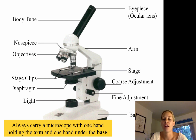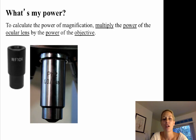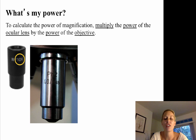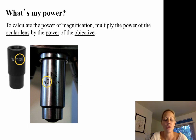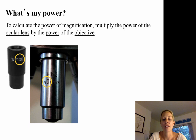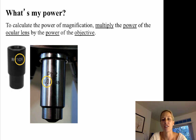Let's take a closer look at how to calculate power. To calculate the power of magnification, you multiply the power of the ocular lens by the power of the objective lens. The ocular lens usually has a 10x magnification, and our three objective lenses have powers of 4x, 10x, and 40x. All objectives and the ocular lens have their magnifications written on them.